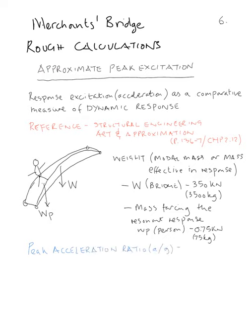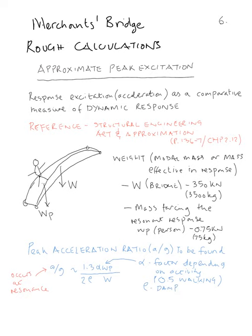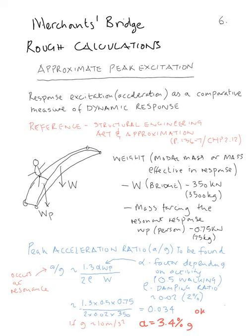The peak acceleration comes from this simple formula which is a ratio of A over G which occurs at resonance. This is 1.3αWP over 2ρW where α is a factor depending on the activity which is walking, and the damping ratio for a bridge is something like 0.2. Putting the values in, we come out with a response of 0.034. If G is an acceleration of 10 meters per second squared approximately, then the peak acceleration from this approximate formula comes out at 3.4% of G. Now this is a high value for office activities or sedentary activities, but for a bridge it can be deemed as acceptable.